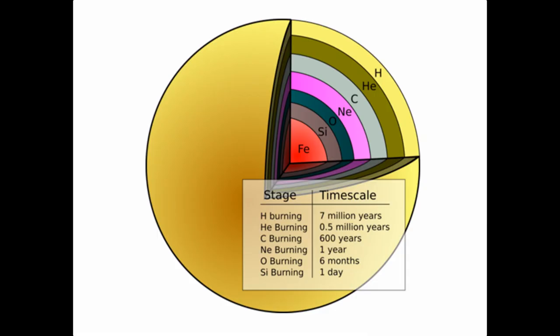Once all of the matter in the core has been turned to helium, the helium fuses into carbon and oxygen. Then the carbon fuses into oxygen, neon, and magnesium. Then the neon fuses into magnesium and oxygen, then the oxygen fuses into silicon, and finally the silicon fuses into iron. At this point in a star's life, its composition has an onion-like, layered structure. At the center is an iron core, and the core is surrounded by a layer of silicon, which is surrounded by a layer of oxygen, which is surrounded by a layer of neon, which is surrounded by a layer of carbon, which is surrounded by a layer of helium, which is surrounded by the hydrogen envelope of the star.